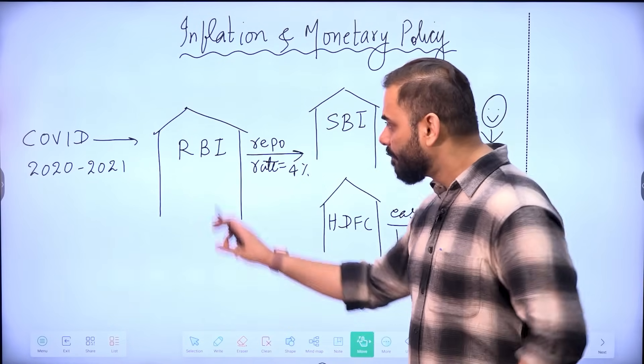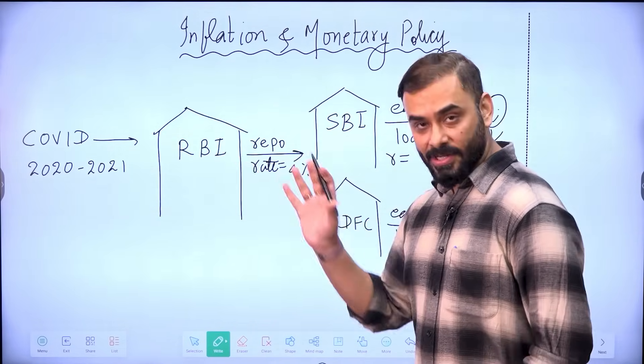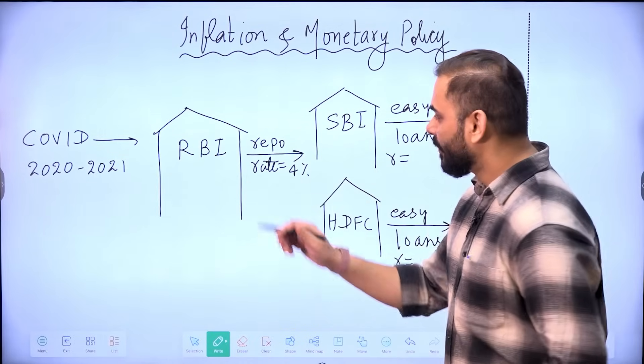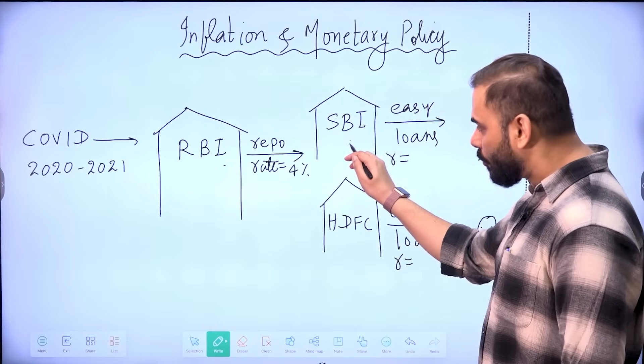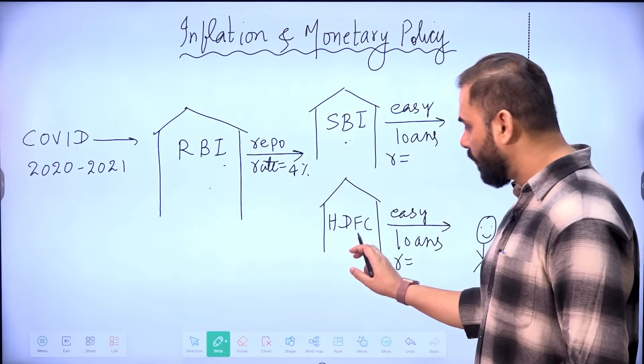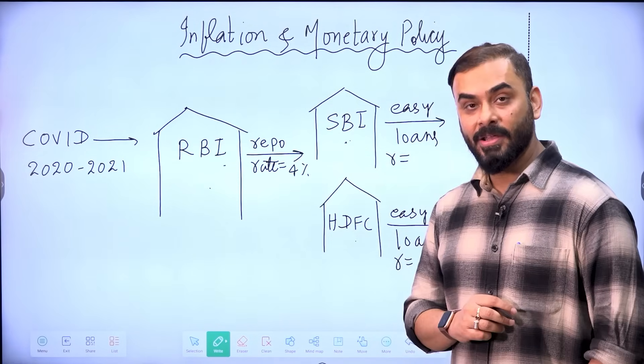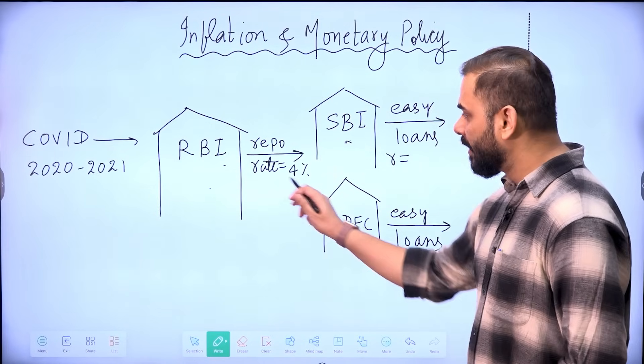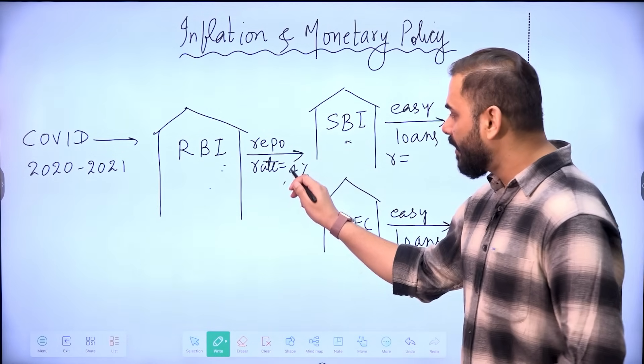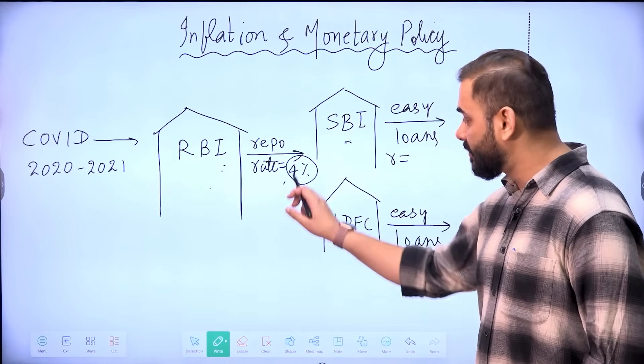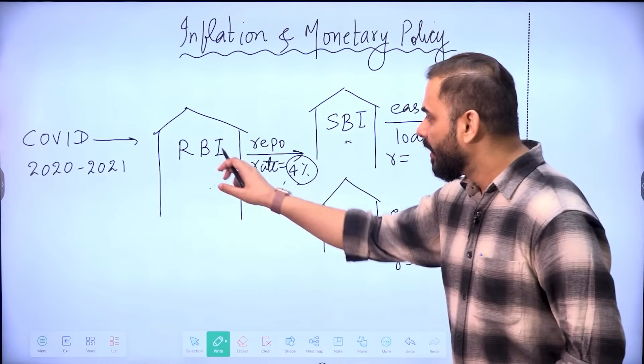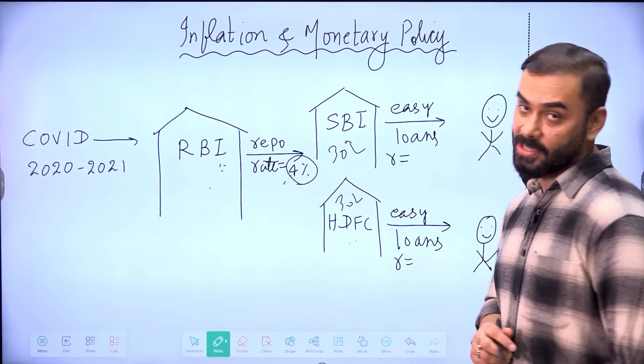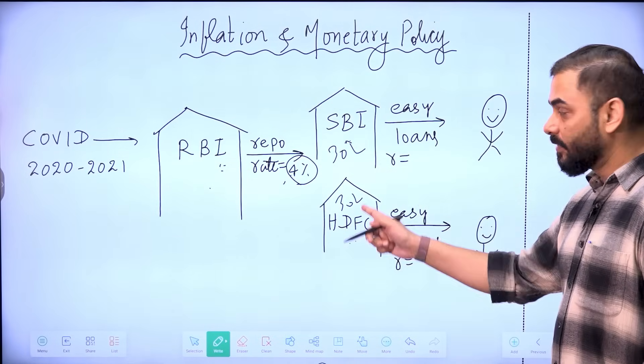So what did Reserve Bank of India do at that time? During COVID 2020, Reserve Bank of India started, you understand that Reserve Bank of India is the regulator of banking system. It's like the mom and dad of banking system. So Reserve Bank of India gave loan to State Bank of India. Reserve Bank of India gave loan to HDFC. When a central bank like Reserve Bank of India gives loan to other banks like SBI and HDFC, commercial banks, Reserve Bank of India charges a rate of interest.